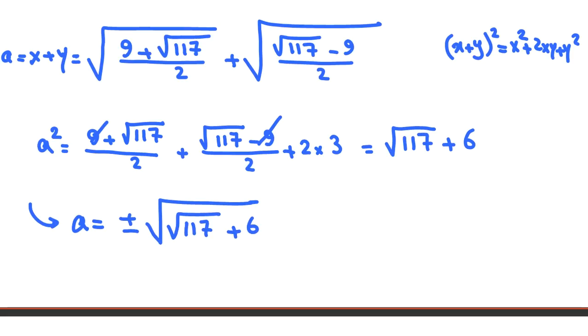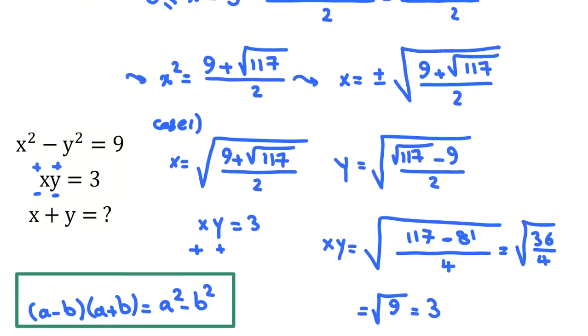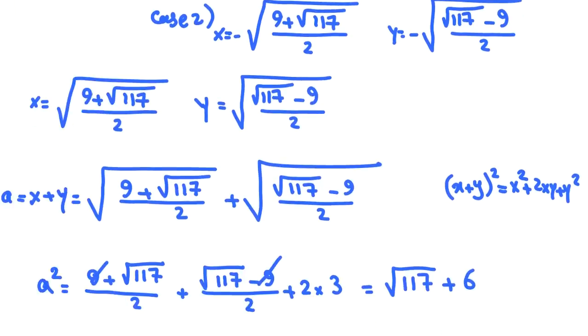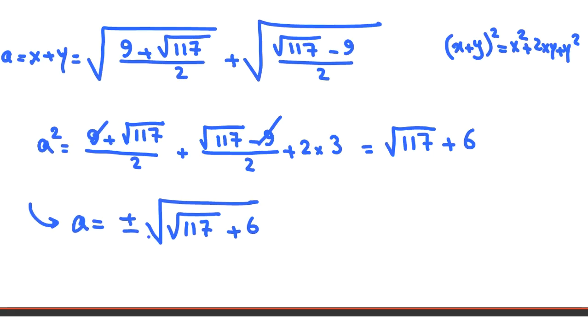So in case 1, x and y are positive. If both of them are positive, then the answer will be plus square root of 117 plus 6. If both of them are negative, in case 2, the answer is negative square root of 117 plus 6. So we found all two answers.